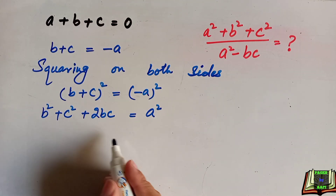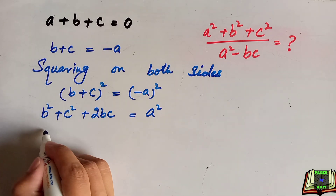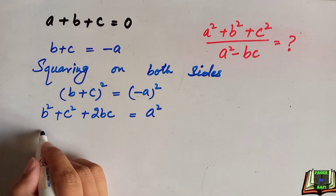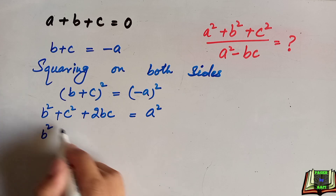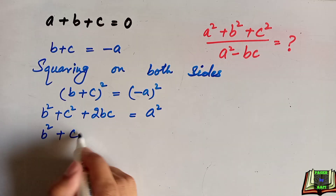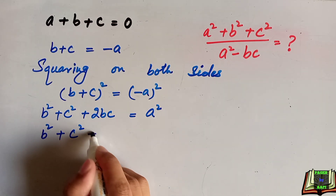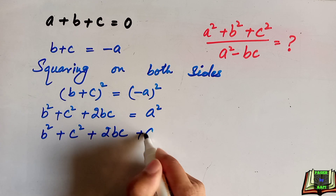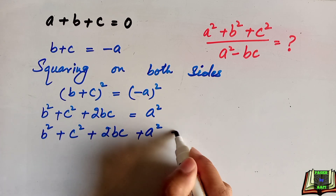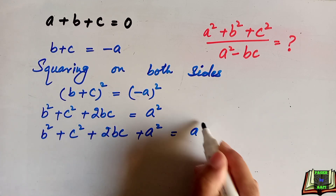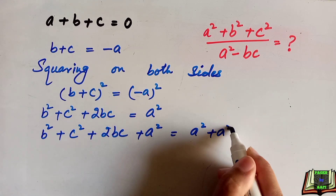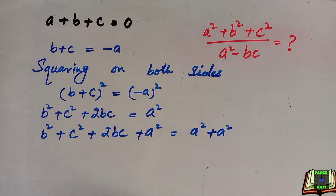We will now add a² to both sides. After adding a² to the left hand side, the equation becomes: b² plus c² plus 2bc plus a². On the right hand side we get a² plus a².